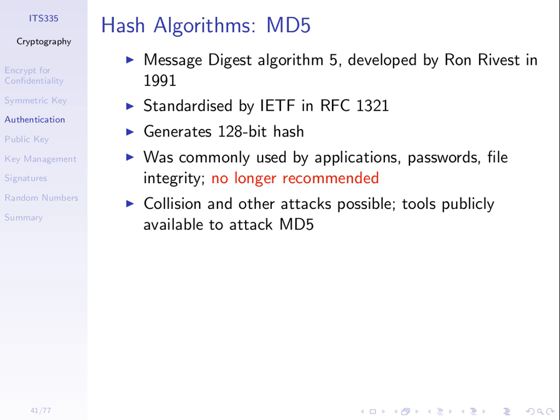You download a file from the internet and sometimes the website will include the hash of the file, allowing you to once you download the file check that the file you downloaded matches the file that was on the server — in case there were errors with the download or maybe someone intercepted and modified the file. Turns out MD5 is subject to attacks — there are known attacks such that it's no longer recommended today for secure applications.